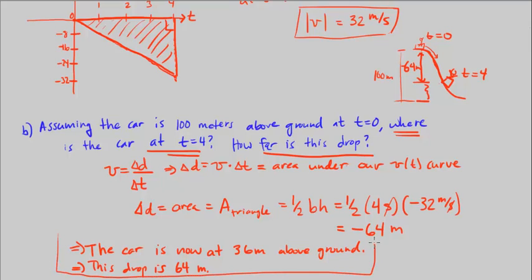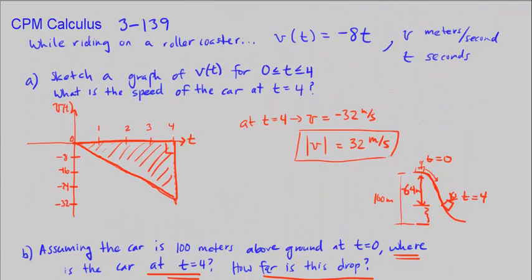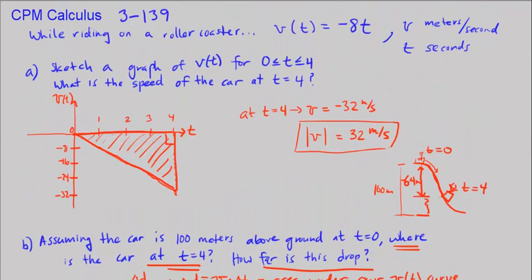Let's box this answer. And that ends our roller coaster ride in CPM Calculus, Chapter 3, Number 139.